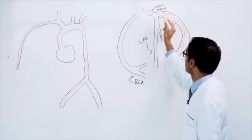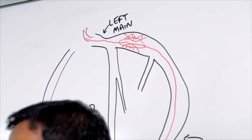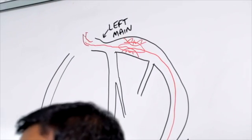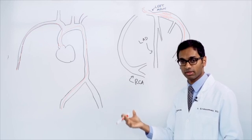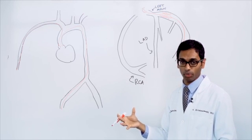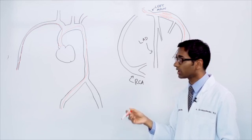We put the balloon into the area of narrowing and inflate it. Once we've made an opening, we place a stent, which is that metal scaffold that keeps the artery open.